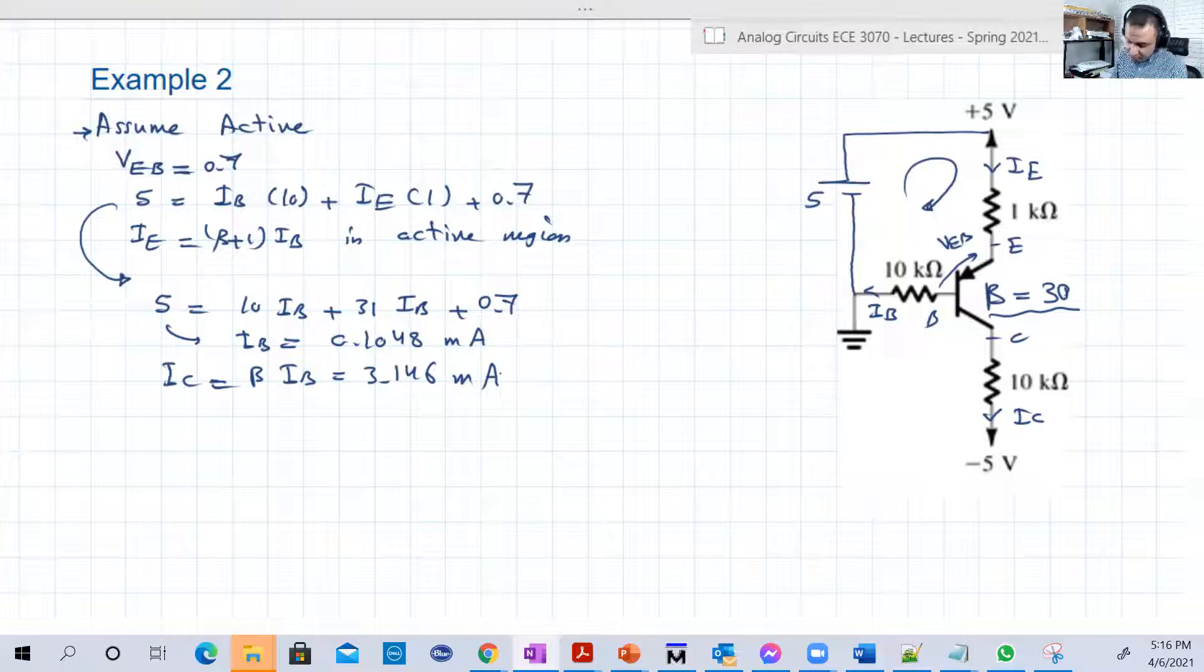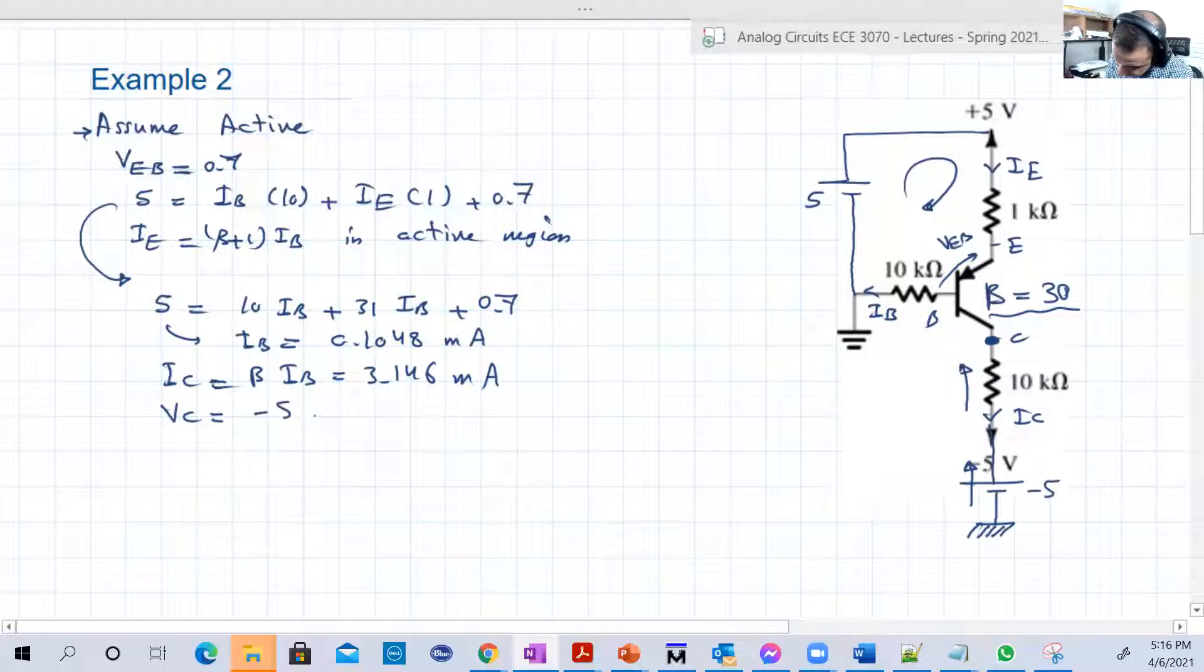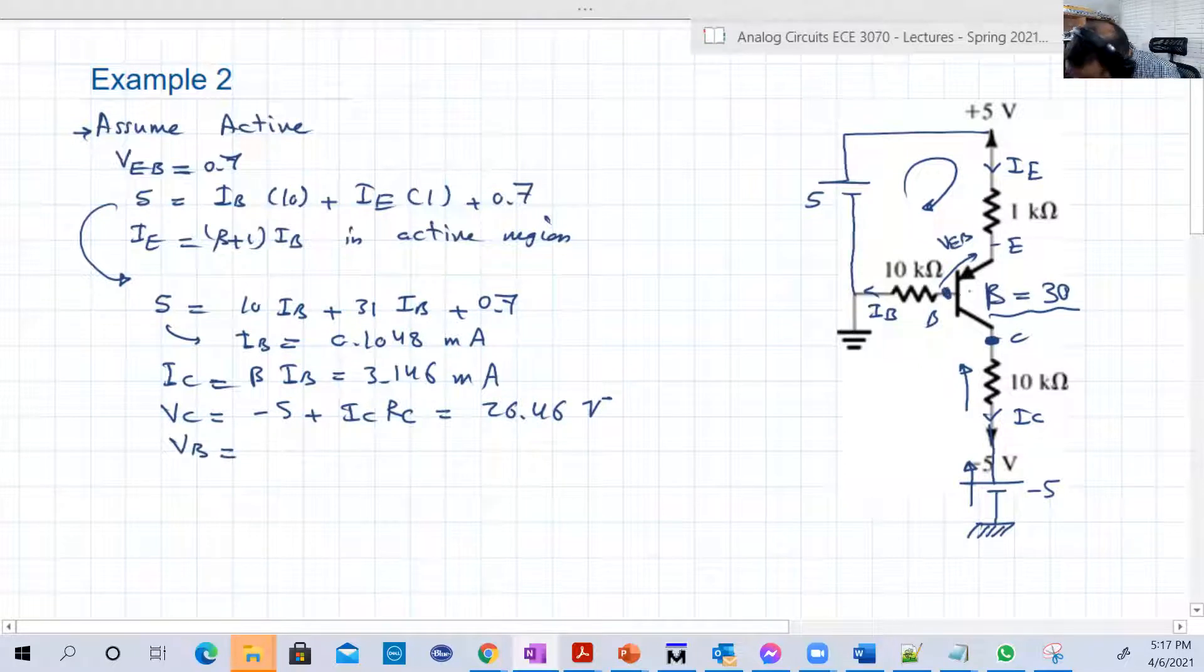That was a moment of truth. We calculate VC, we calculate VB, and try to find if G2 is really reverse or not. So VC, if we, is a voltage of that point, we can extend this minus 5 to a battery like this with this direction. So this will be the direction of ICRC. So VC is minus 5 plus ICRC. VC is 10 kilo. So, and IC is known now 3.14. So this will be basically 26.46 volt.